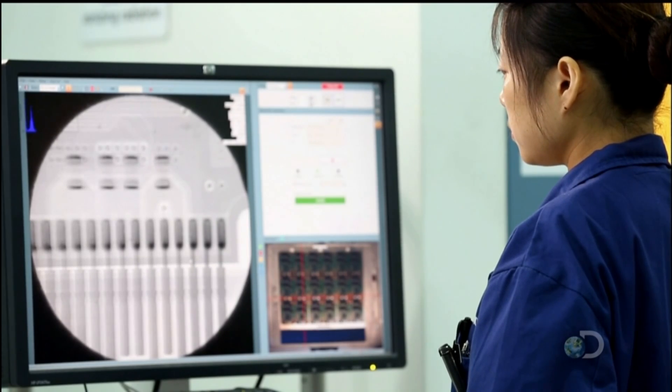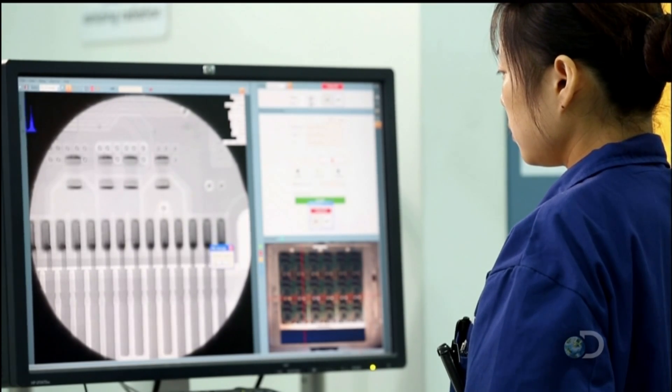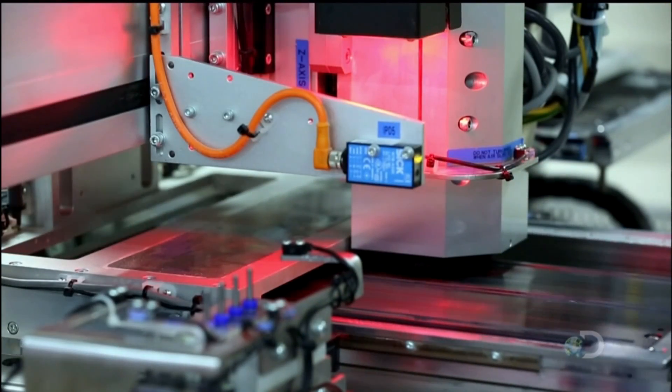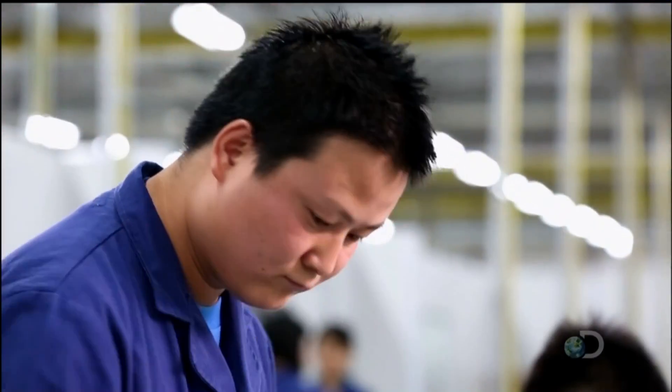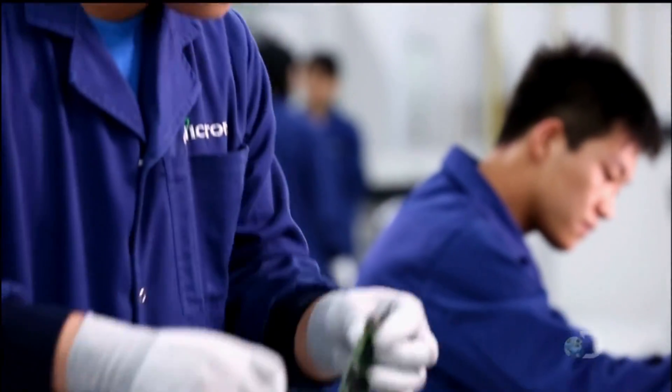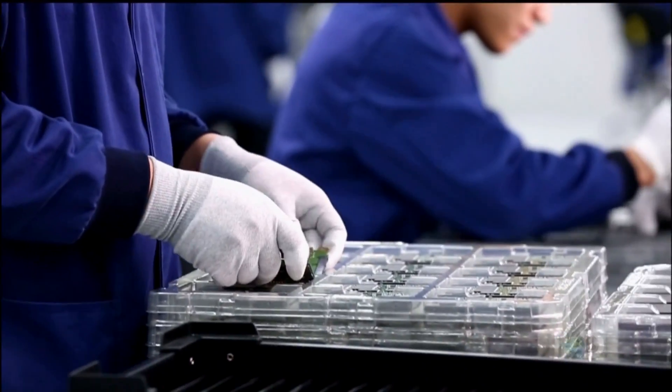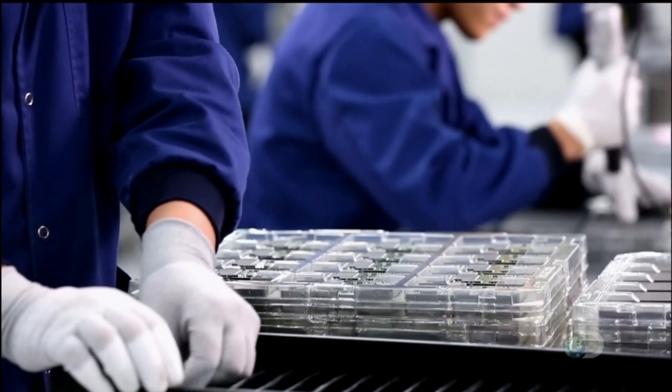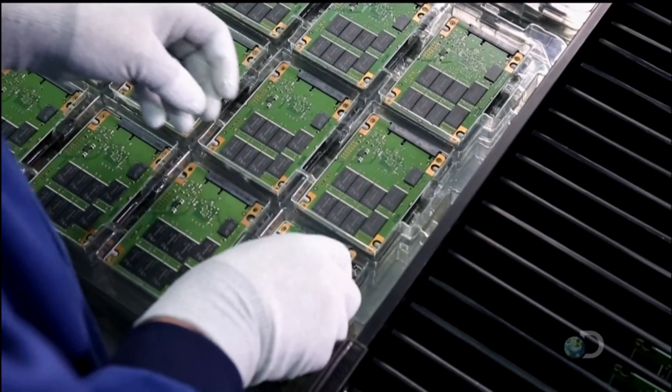Until now, six circuit boards have been attached to each other. An automated router now cuts them apart, and workers insert each board into a protective plastic housing. A slot on the outside of this housing reveals the board's connector, by which the drive links to the computer.